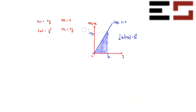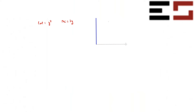Let's now do this problem graphically. I'll draw marginal revenue as a horizontal line and marginal cost as an upward-sloping line through the origin.